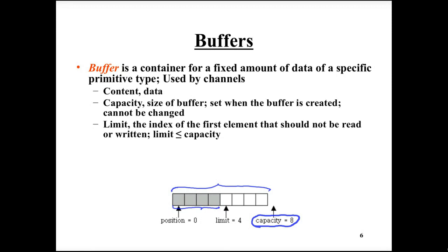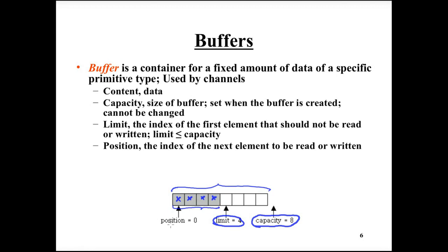The limit is the index of the first element that is irrelevant or should not be used in the particular situation. If we have written four elements to the buffer, the limit points to index 4 because nothing has been placed there. The position is the index that should be used the next time — if we have not read anything yet, we read from position 0, and then position advances to index 1.